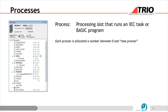Each controller has a maximum number of processes allowed. Zero is the first one, and whatever the maximum is will be the top. On these controllers the maximum is nine. On the 664, the maximum is 21, and on a lot of our high-end controllers it's 21. On our lowest range controller, the 403, it's only zero to five — six processes.